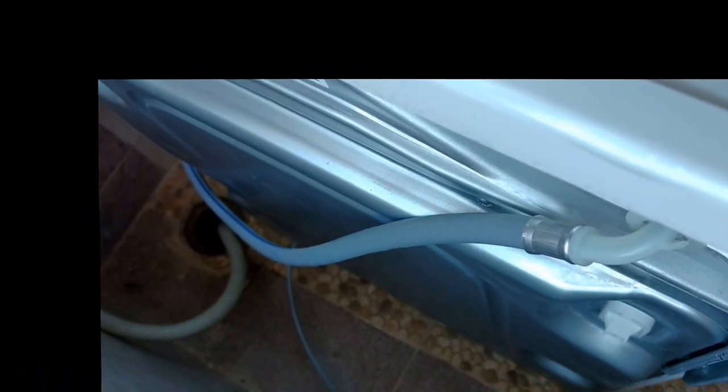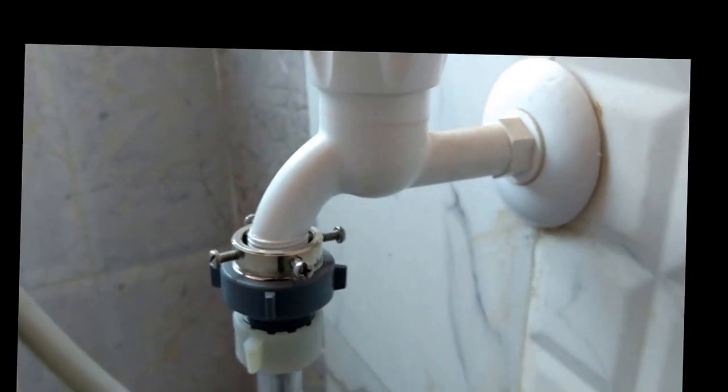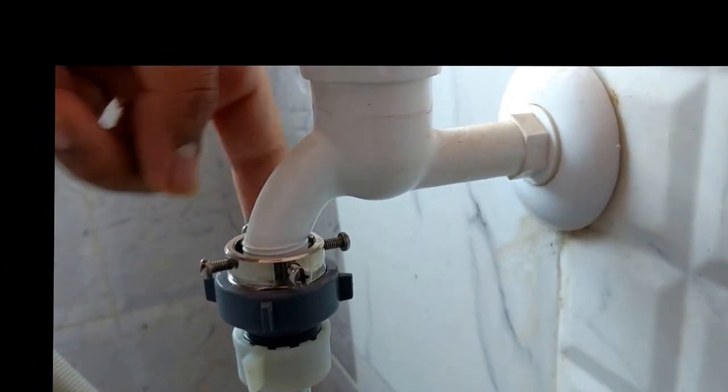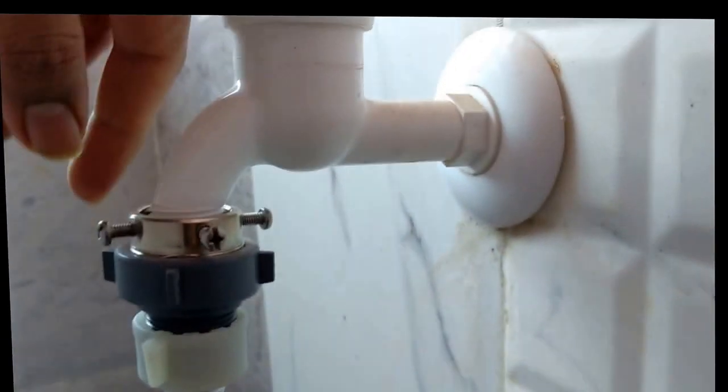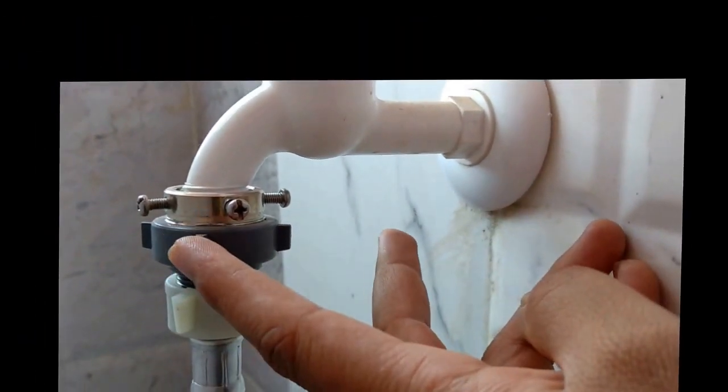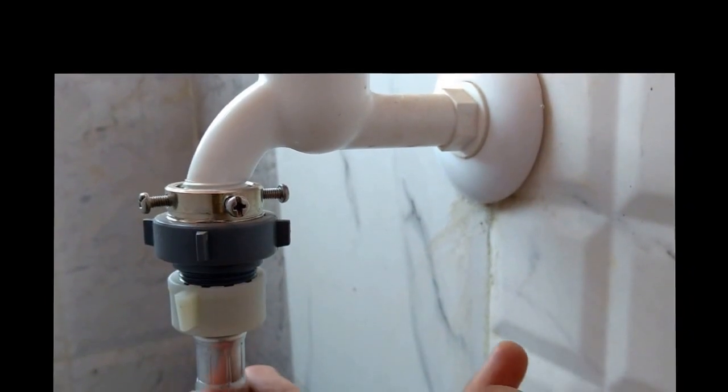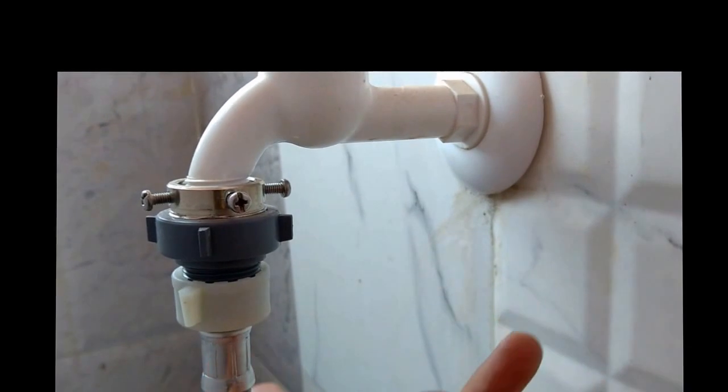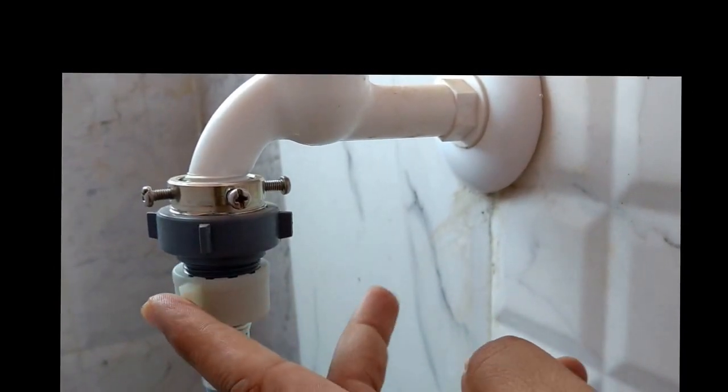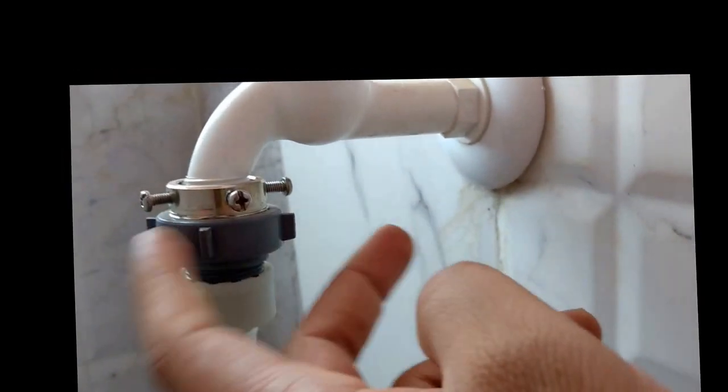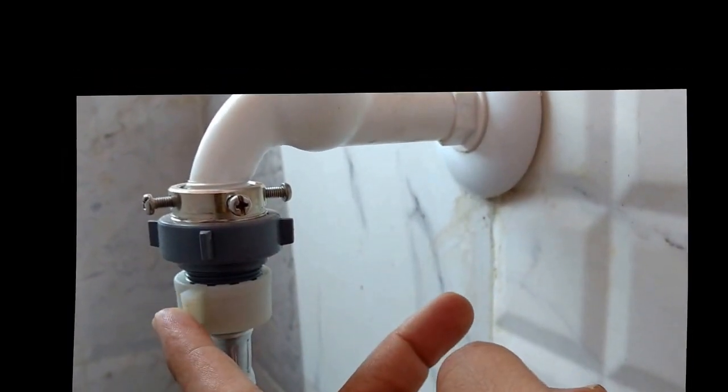Lastly that you need to know is Bosch does not provide you this water tap adapter. Another information that you need to know is if let's say you have this adapter from your old machine, you can't use for this washing machine. The mouth of this input pipe is wider than the older washing machine model adapters.